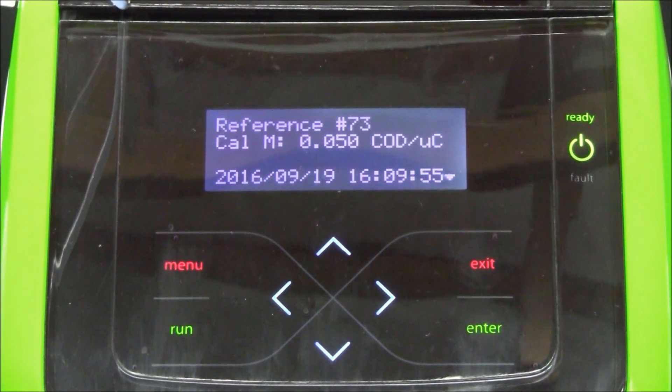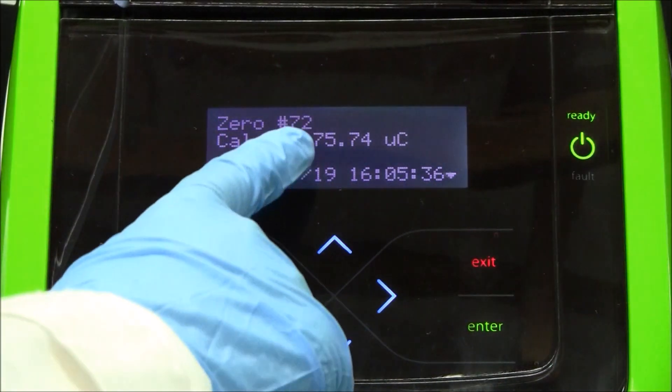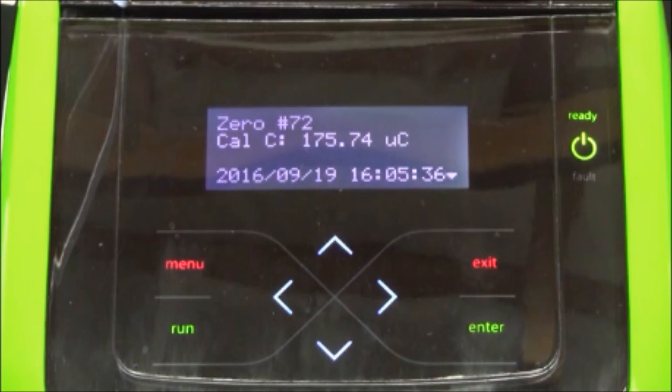When calibration is complete, the M and C values are displayed. If they are within specified limits, the sensor is conditioned and the L100 is ready for analysis.